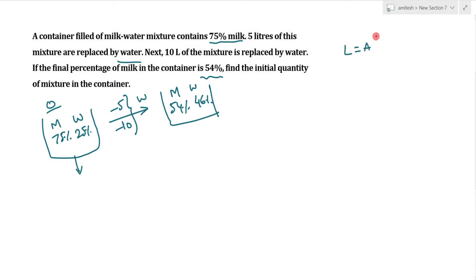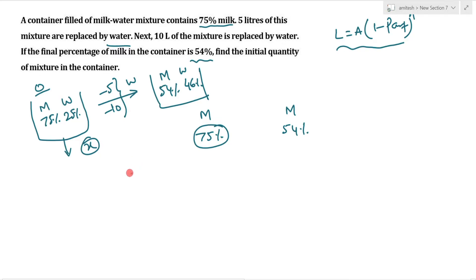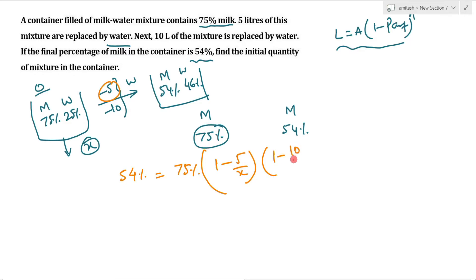Using the replacement method, the left amount is equal to the original amount multiplied by (1 minus part of replacement) to the power n. So the left quantity: starting with 75% milk going to 54%, the equation becomes 1 minus 5 divided by x, into 1 minus 10 divided by x.